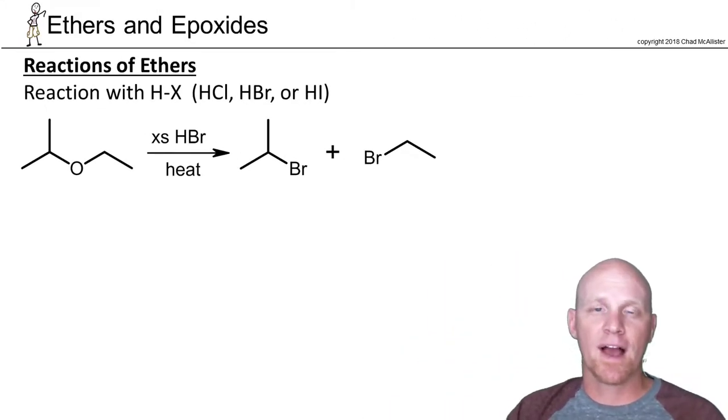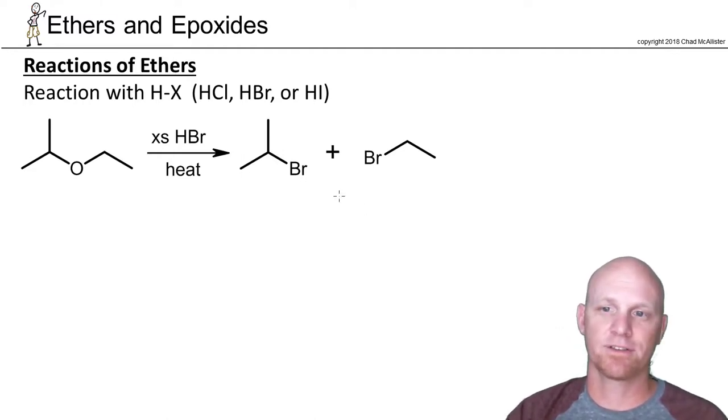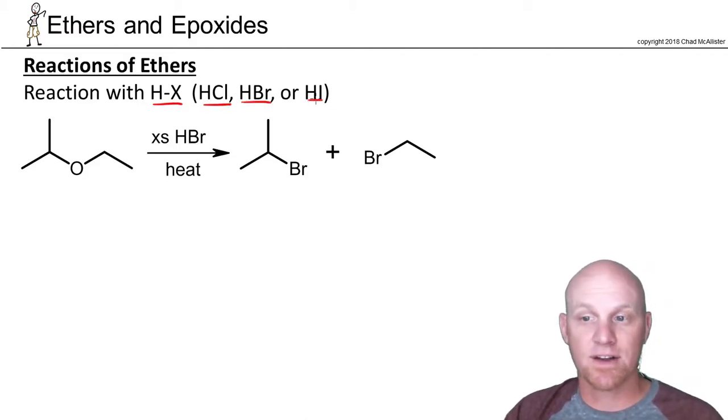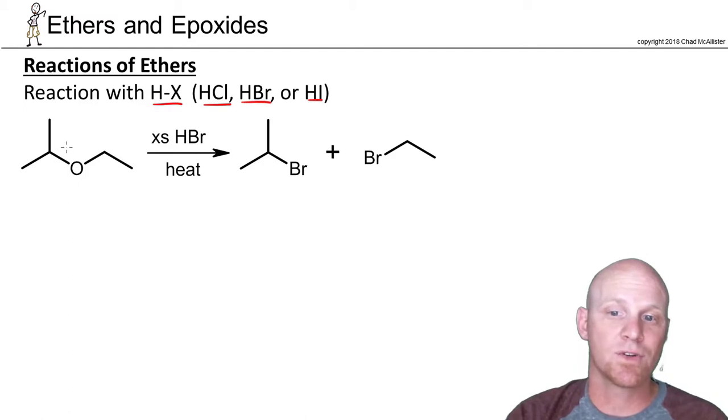So now we want to take a look at the reactions of ethers and really there's just one major reaction to worry about here and that's the acid hydrolysis of an ether. In this case we're going to react it with HX where HX is either HCl, HBr or HI. In this case I've got an example with HBr